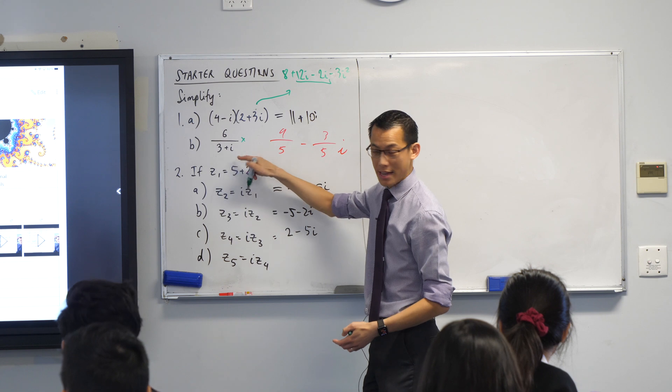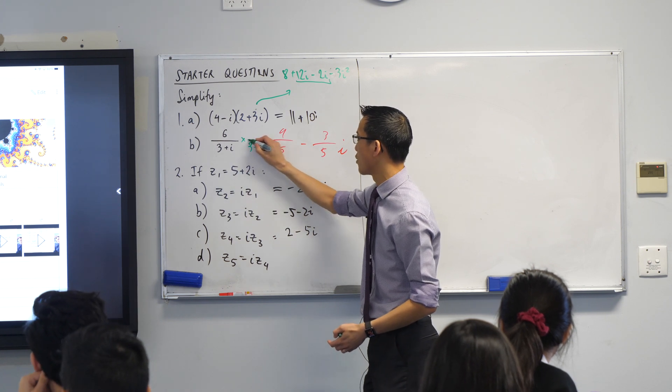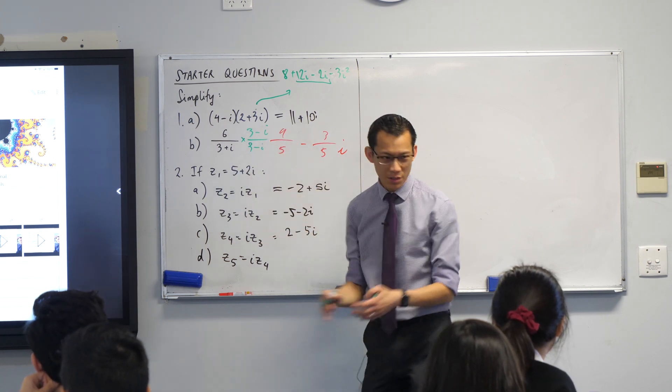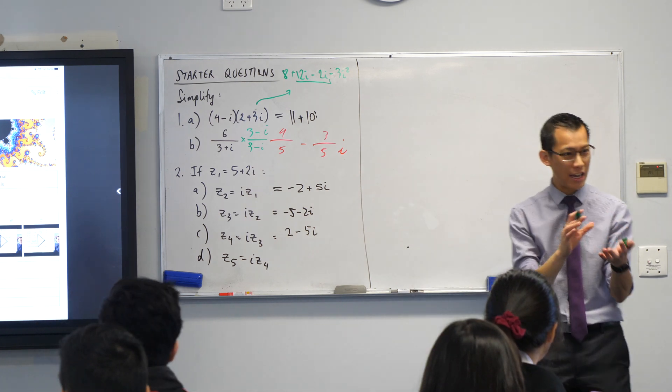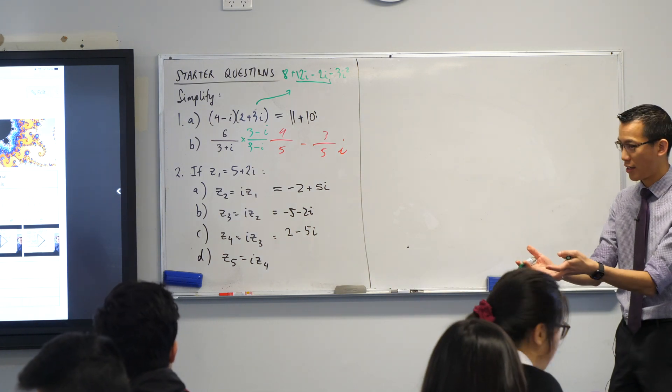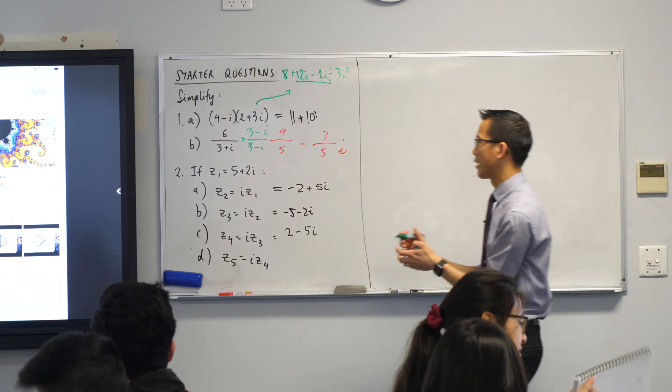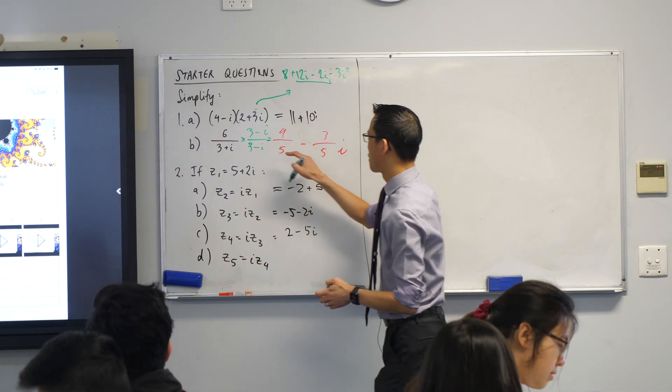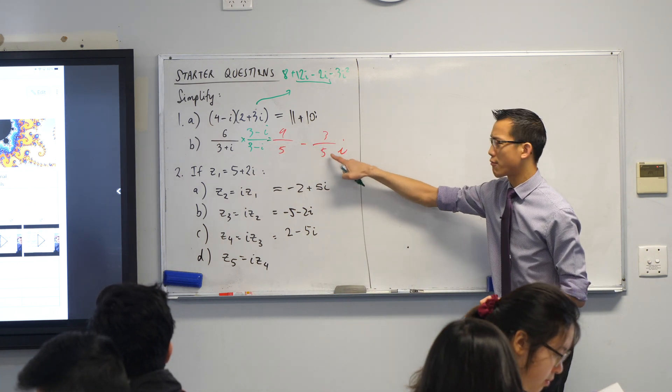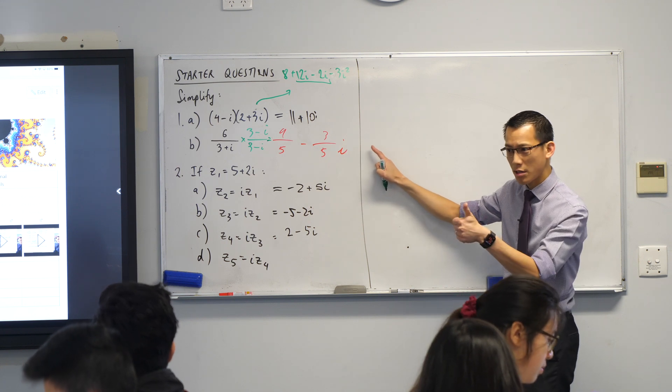Because it's not 3 plus i, it's 3 minus i that we're multiplying by. And so it's the imaginary part that's changing. So it's the complex conjugate. So we should be particular with that language. Do we end up there? 9 over 5 minus 3 over 5i? Happy with that? Thumbs up?